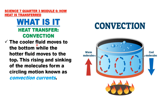The cooler fluid moves to the bottom while the hotter fluid moves to the top. This rising and sinking of the molecules forms a circling motion known as convection currents. The heat from the burner is transferred to the pot. The water at the bottom becomes heated first. The hot water at the bottom rises to the top because it has lesser density — represented by red arrows going up — while cool water molecules, represented by blue arrows, sink to the bottom. This circling motion is known as convection currents, and it is the reason why the entire pot of water becomes hot.